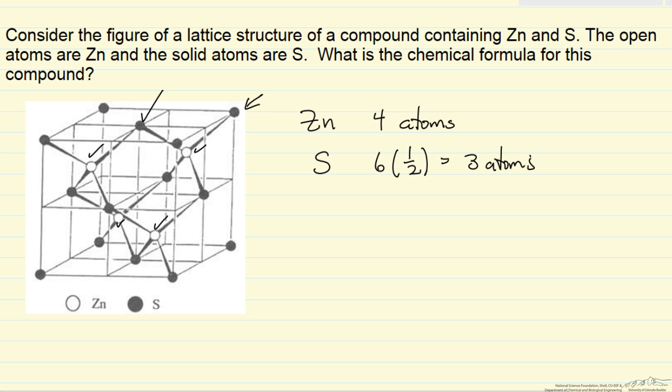We have 8 corners. Now these corner atoms are shared with 7 others. So only 1/8th, a total of 8 identical structures as we build out the structure, share these corner atoms. So we have another 1 atom from the corners. So that's counting for the 8 corners and the 6 faces.